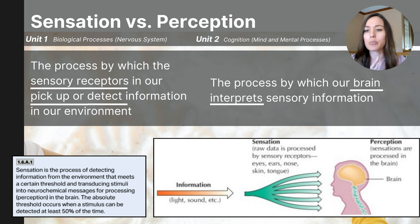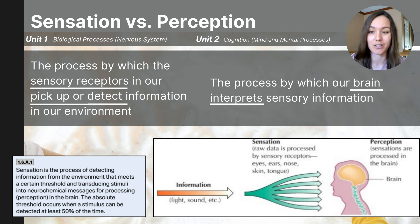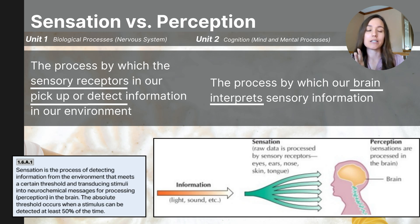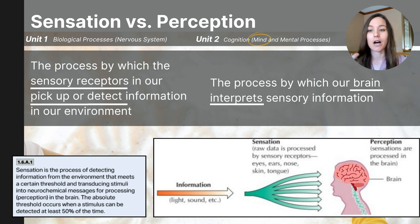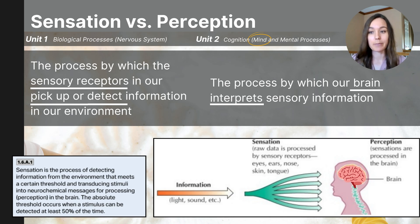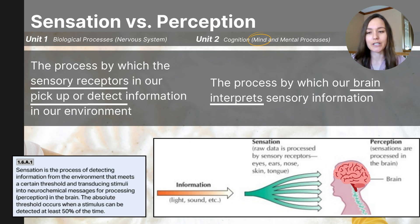Cognition includes things like thinking, problem solving, creativity, memory, intelligence, and perception. So since perception is more of a function of the mind, the College Board has placed it in Unit 2. It will actually be the first topic that we start with after completing Unit 1, so it won't be as disjointed as it might seem right now.